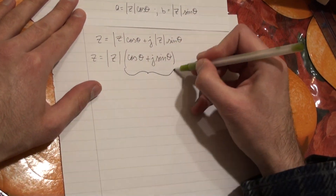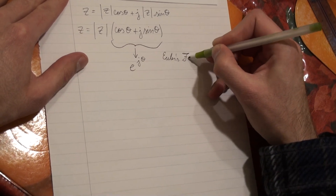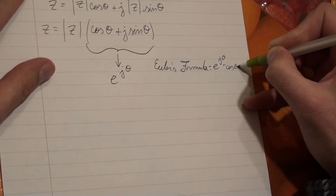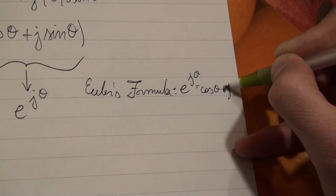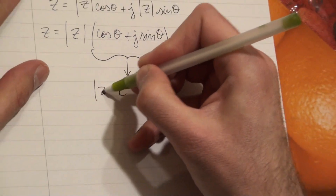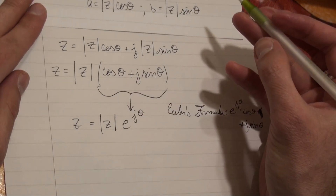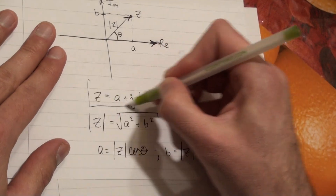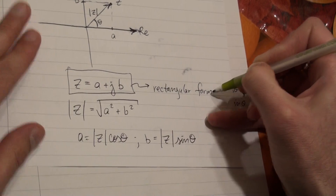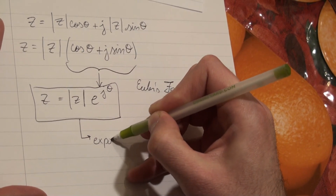This part — cosine theta plus J sine theta — can be written as e to the J theta using Euler's formula, which states that e to the J theta equals cosine theta plus J sine theta. So your complex number can be written in two forms. The original form is called rectangular form, and this one is called exponential form.